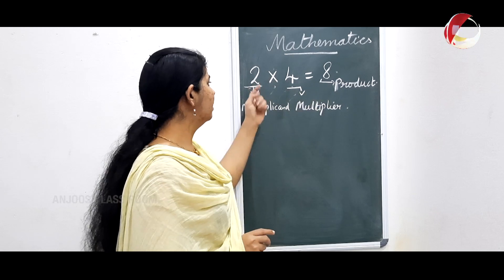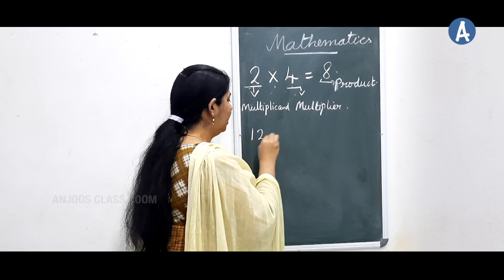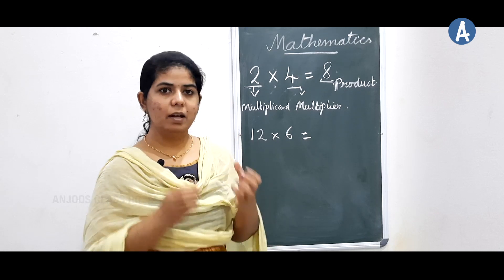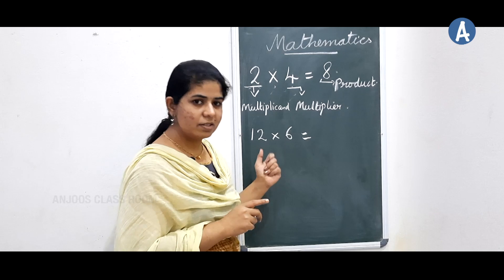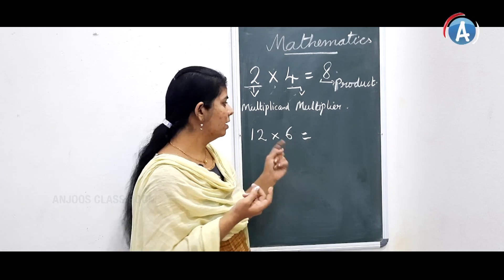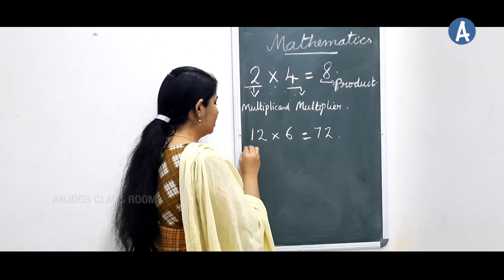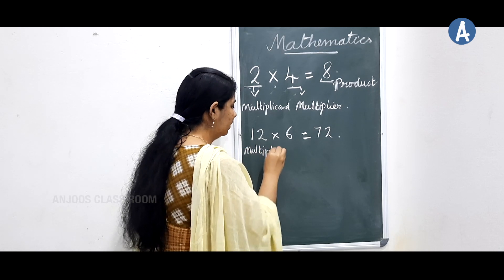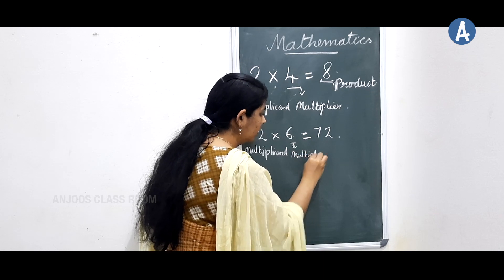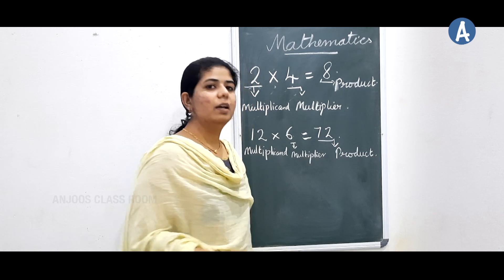So in 2 into 4 equals 8: here 2 is the multiplicand, 4 is the multiplier, and 8 is the product. In the same way, for 12 into 6: which is the multiplicand? The number we have to multiply — that is 12. So 12 is the multiplicand, 6 is the multiplier. And the product? 12 sixes are 72. So 72 is the product — the answer we get after multiplying the two numbers.